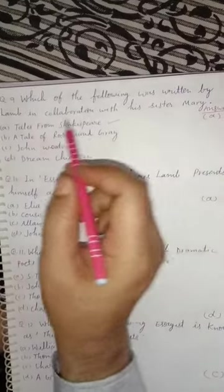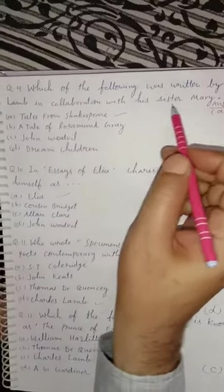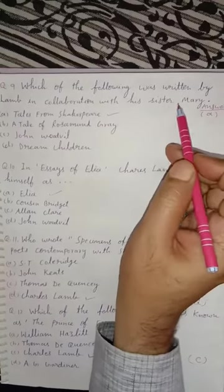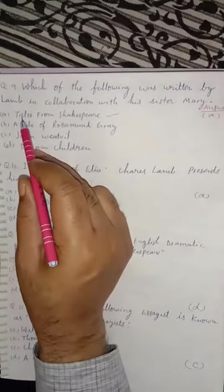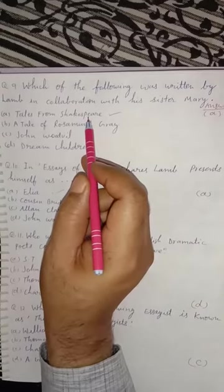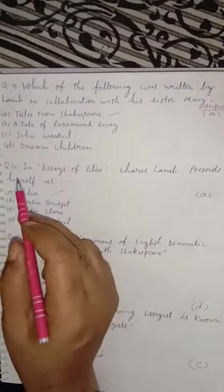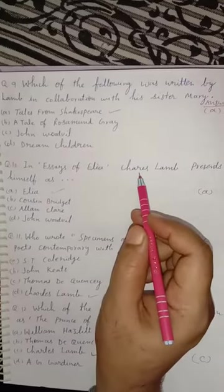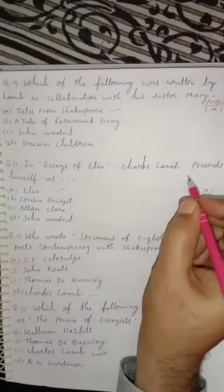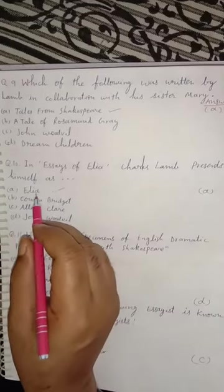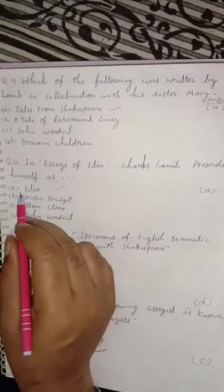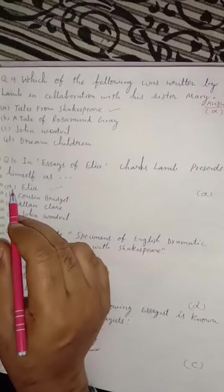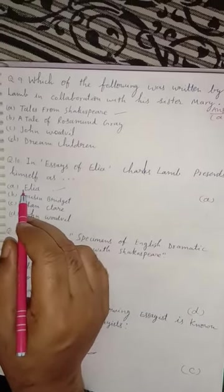Question 9. Which of the following was written by Lamb in collaboration with his sister Mary Lamb? The right answer is 'Tales from Shakespeare.' The right option is A. Question 10. In 'Essays of Elia,' Charles Lamb presents himself as Elia — his pen name was Elia. Option A is correct.